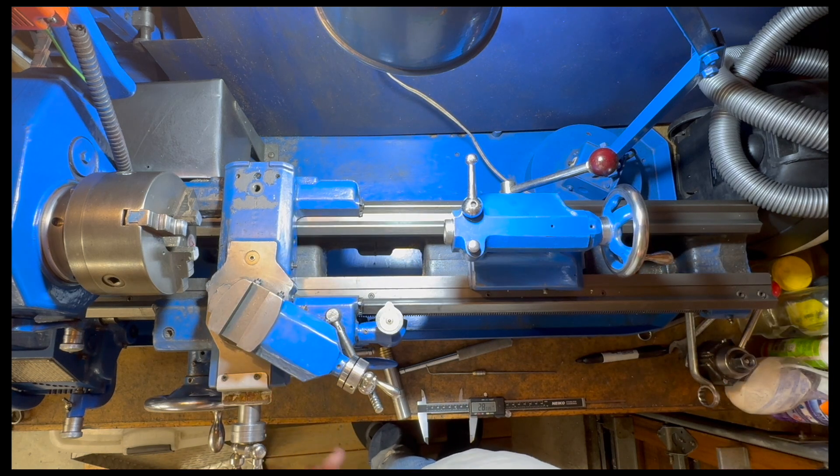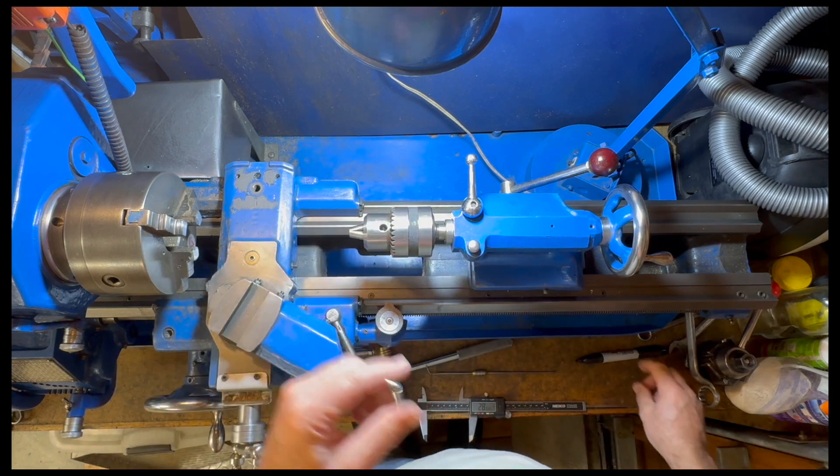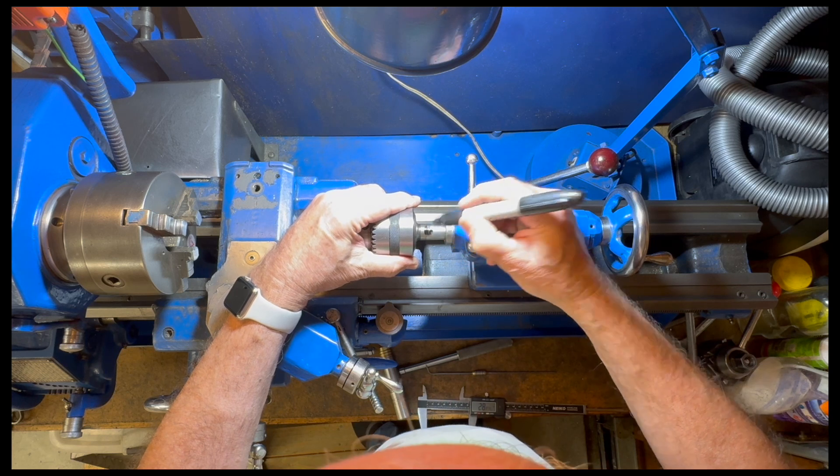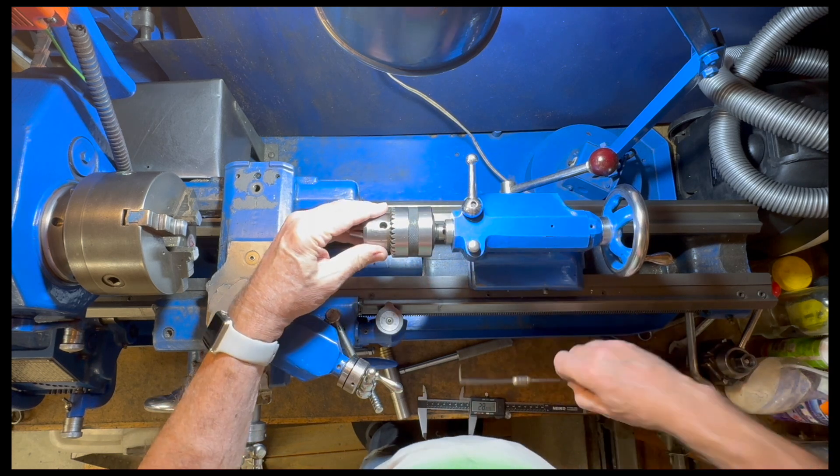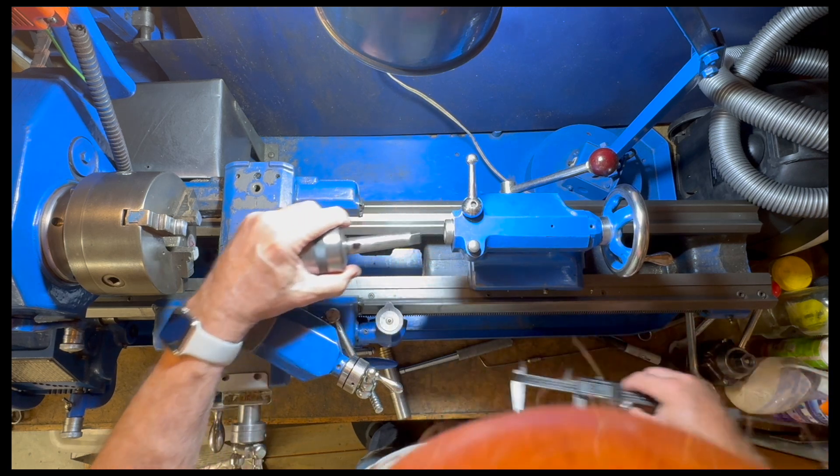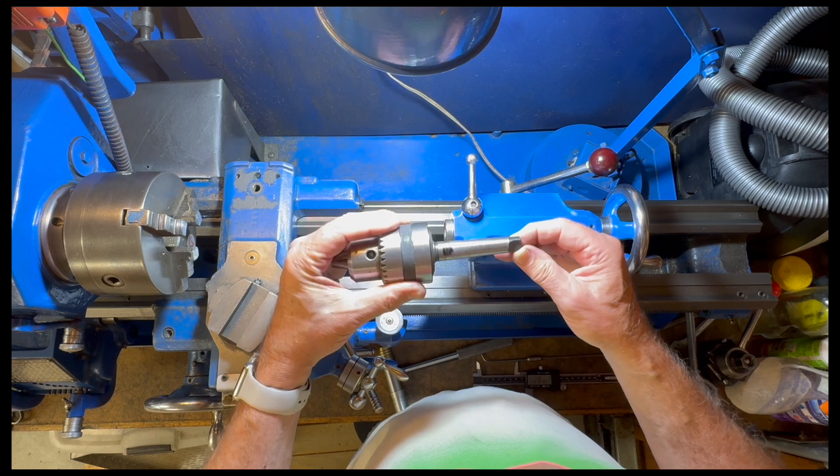So now I'll take the Jacobs chuck and do the same thing. Pop it in, make a felt tip mark, scribe it, and measure how long that is. Then take it to the grinder and remove that extra length.